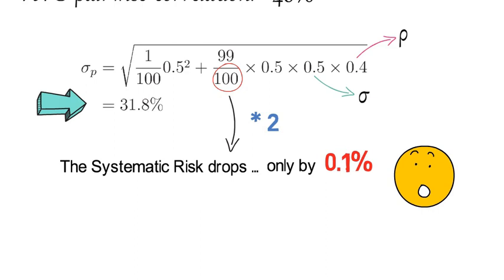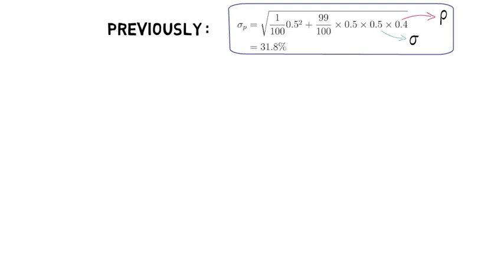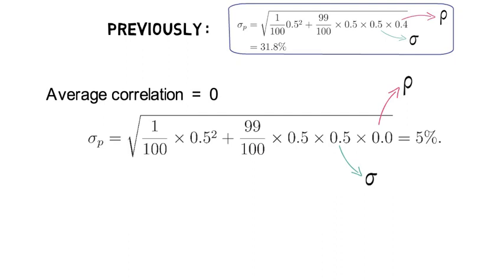What you really need is to reduce the average pairwise correlation of all the assets in the portfolio. To visualize that: imagine the same setup as previously, but now the average correlation among assets is assumed to be 0. In that case, the amount of systematic risk for a 100-asset equal weight portfolio would drop to just 5%.